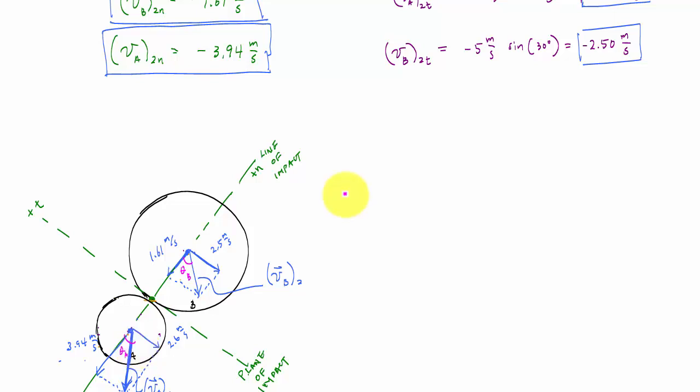And then I can use my tangent function and calculate this angle or any angle that I need to. And I could call this theta B and I call this theta A. And if just in case you want to know, tangent theta B, if I want to solve, this would be the opposite which is 2.5 over 1.61, and then I would get that theta B is 57.2 degrees relative to that normal. And then theta A, again, opposite over the adjacent, which would be 2.6 over 3.94, and theta A is 33.4 degrees relative to N or the line of impact.